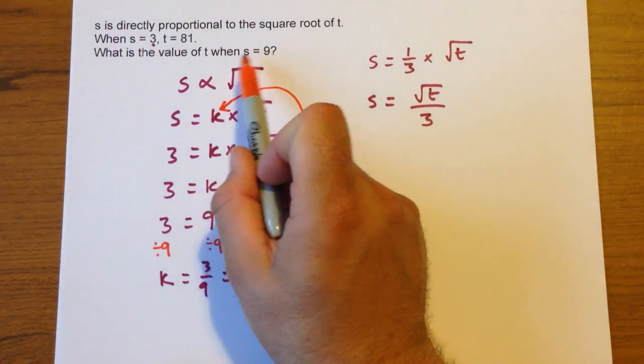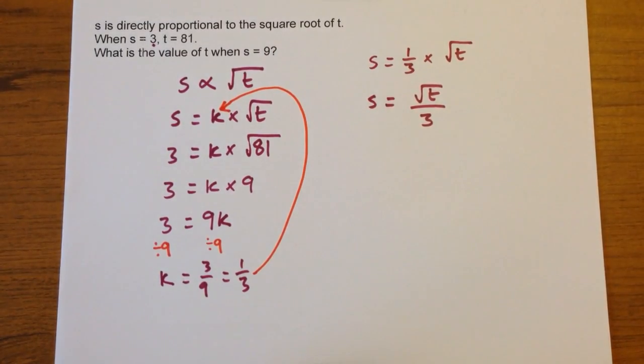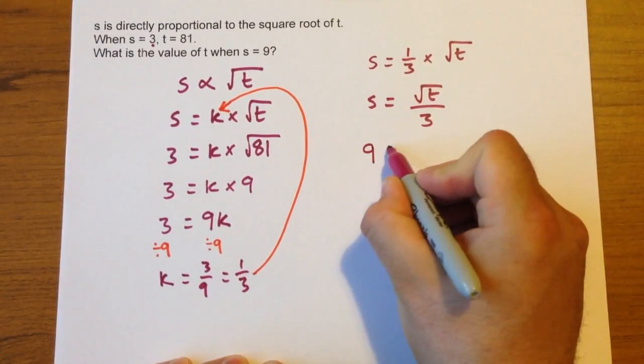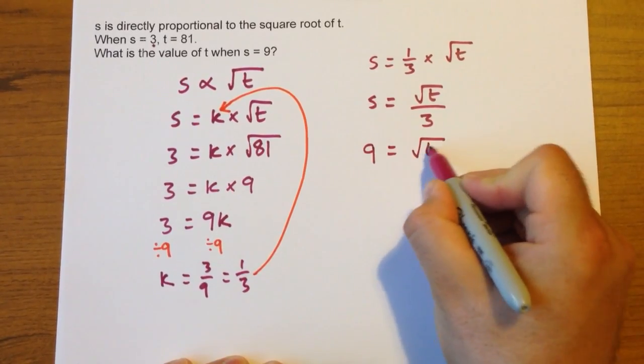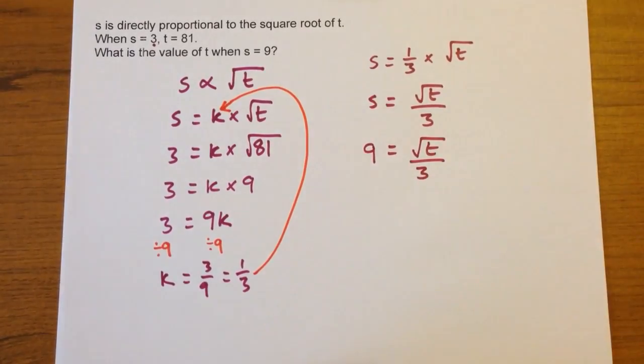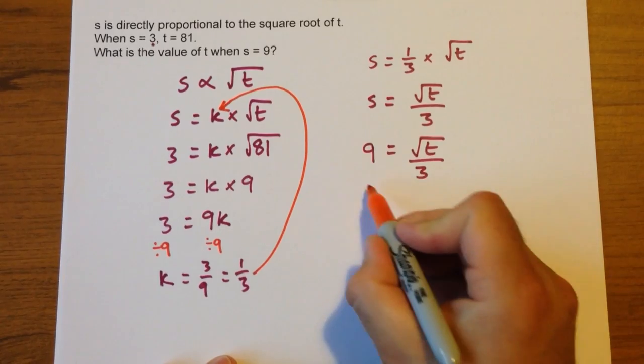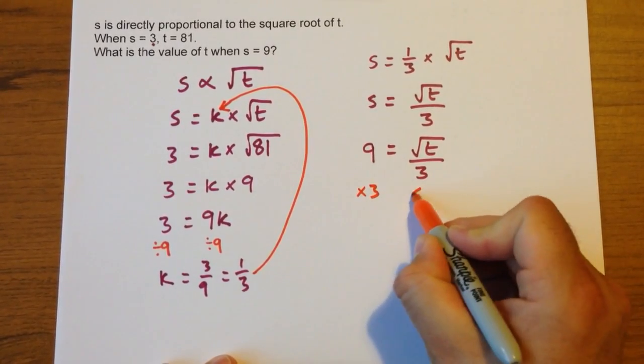Now, what is the value of t when s equals 9? So substitute in what you know. 9 equals square root of t, all divided by 3. We'll get rid of this divided by 3 by multiplying both sides by 3.